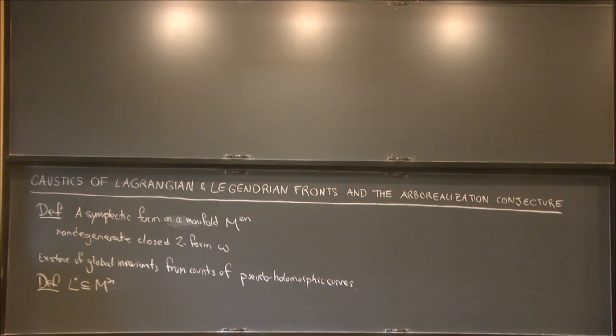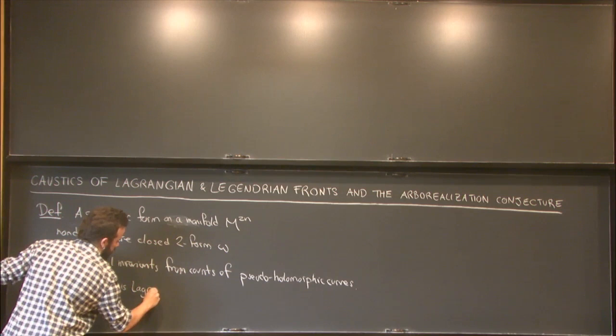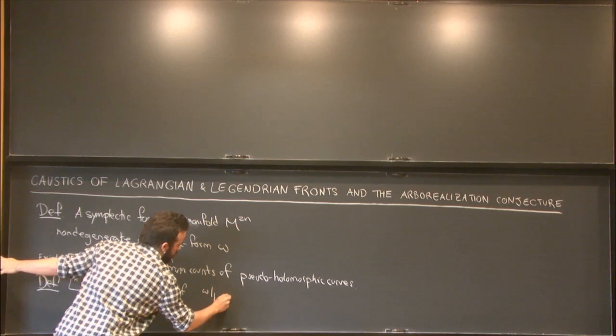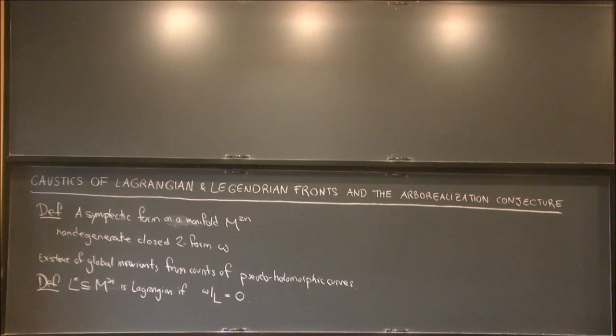I will say that a half-dimensional submanifold is Lagrangian if the form vanishes on it. In general, if I have a submanifold on which the form vanishes, I will just say it is isotropic. And in this maximal dimensional case, I will say it is Lagrangian.